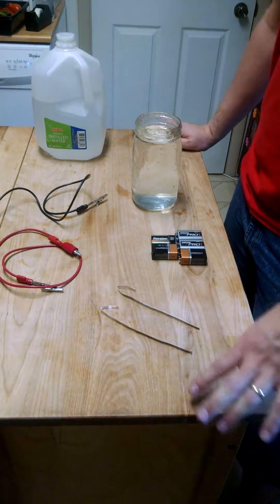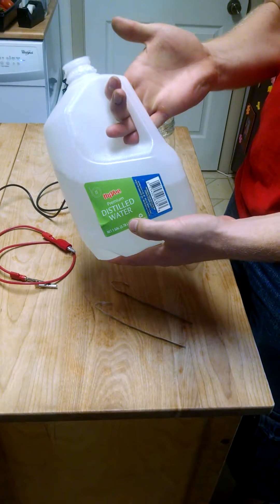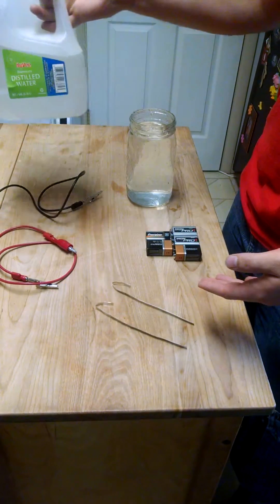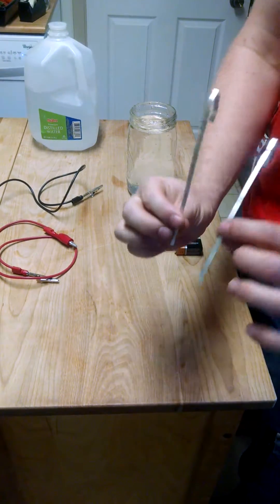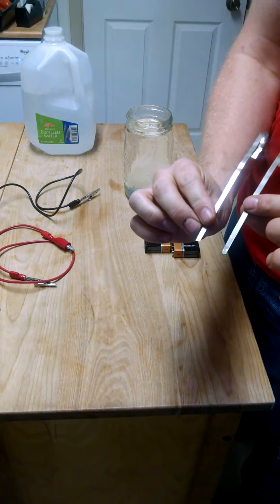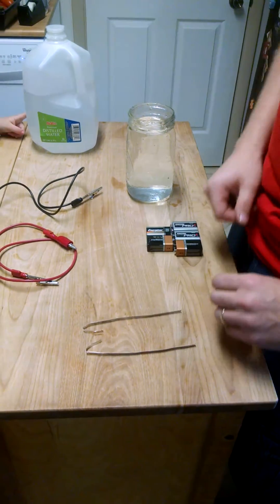I'm going to make some colloidal silver today. What you're going to need is distilled water, must be distilled, not spring water, otherwise you'll have minerals in it and they'll react with your silver. And then we have two silver leads, and these are very pure silver. They're 99.99% silver, so make sure you get pure leads.